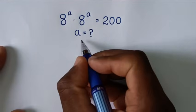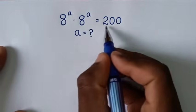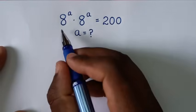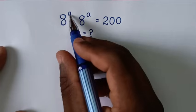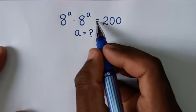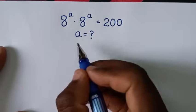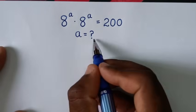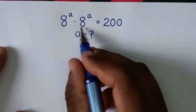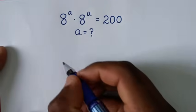Hello, you are welcome to solve this math problem, which is 8 power a times 8 power a is equal to 200, to find the value of a from this equation.